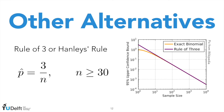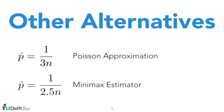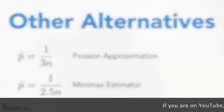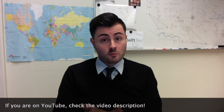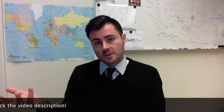Other estimators worth examining can be derived from the rule of 3, quite used in biostatistics and clinical trials, or from estimators based on the common Poisson approximation of the binomial distribution and refinements given by the minimax criteria. Have a look at the papers I am uploading on the course platform. Many other estimators can be proposed and it is almost impossible to consider all of them in a single class. I am posting extra materials on the course platform that I hope you will find interesting.